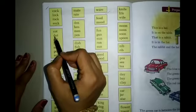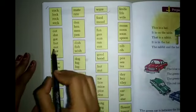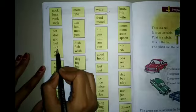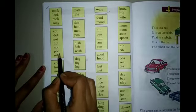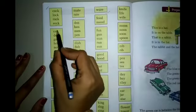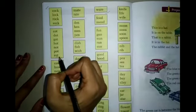C-O-T Cot, D-O-T Dot, G-O-T Got, H-O-T Hot, N-O-T Not, P-O-T Pot, R-O-T Rot. OT is the same ending of these words.